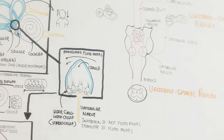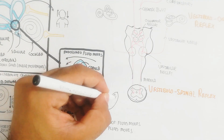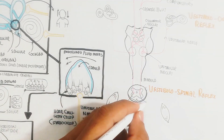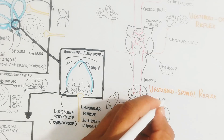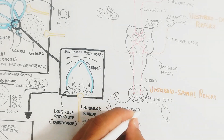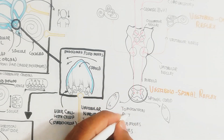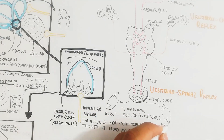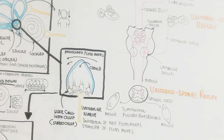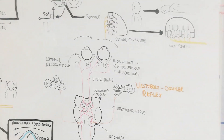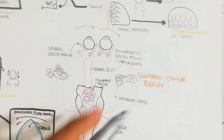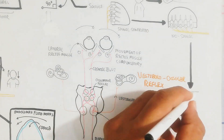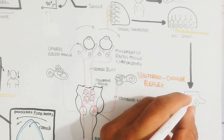The vestibulo-spinal reflex involves the spinal cord to maintain posture and balance through muscles. Muscles are maintained by contraction and relaxation based on their position, and that is how we can control balance. That is the physiology of balance.